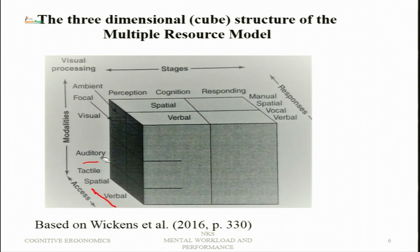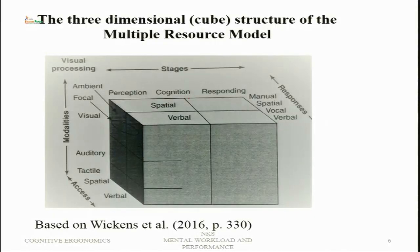Stage 1 in terms of information reception and processing, and Stage 2 in terms of action selection and response execution, will use different resources, so interference will not be there. This three-dimensional model represents how these different resources are divided or available without any interference between those stages.